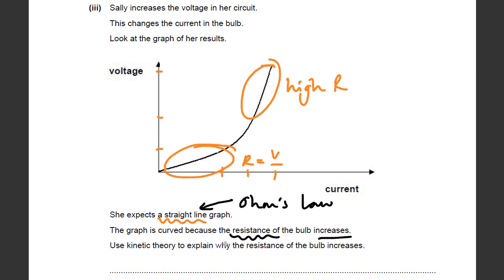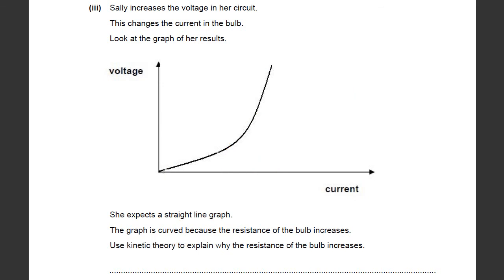Now, use kinetic theory — kinetic theory is the theory that the entire universe is made up of particles which are moving more or less to some extent — to explain why the resistance of the bulb increases. You need to remember a kind of definition of why, in a non-ohmic resistor or any metallic conductor, current causes this change in resistance. Pause it and have a little go — this is a free mark question.